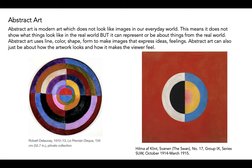Abstract art is modern art which does not look like images in our everyday world. This means it does not show what things look like in the real world, but it can represent or be about things from the real world. Abstract art uses line, color, shape, and form to make images that express ideas and feelings.